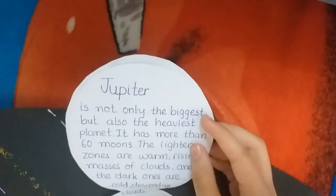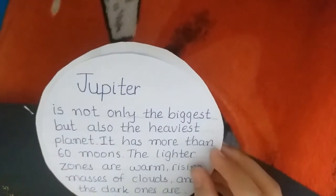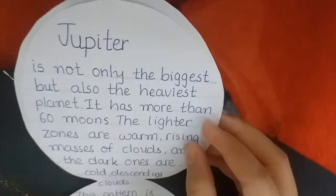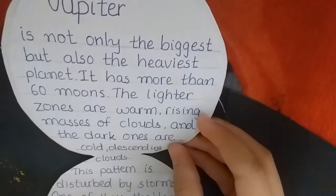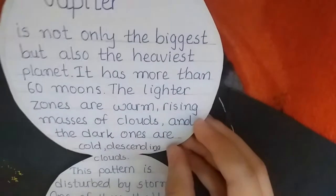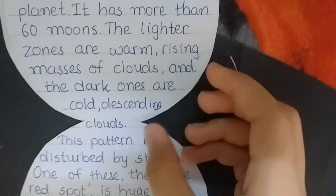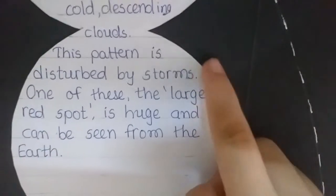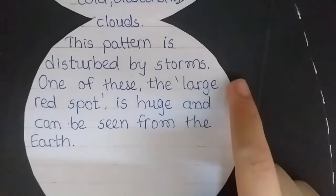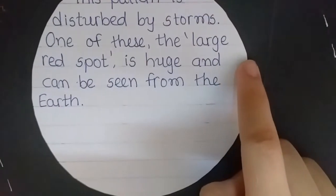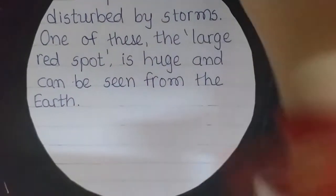Jupiter is not only the biggest but also the heaviest planet. It has more than 60 moons. The lighter zones are warm, rising masses of clouds, and the dark ones are cold, descending clouds. This pattern is disturbed by storms.